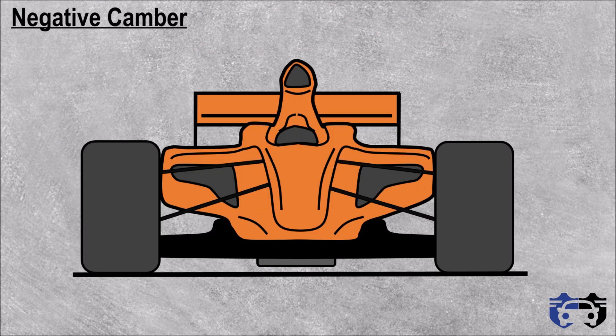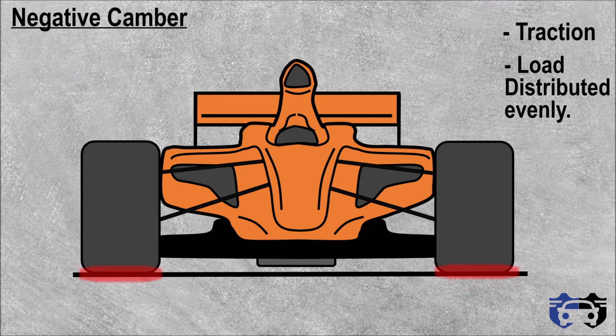Now let's see what are the benefits of having negative camber. When the car is on the road with the full width of the tire contacting the ground, the tires have enough traction and the load is distributed evenly. Hence, neutral camber — or a vertical tire — is good for straight road handling.